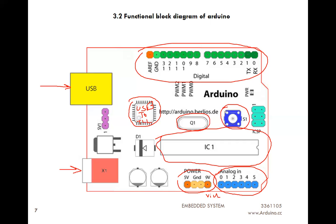The 5 volt regulator: whatever input is given to the DC jack is stepped down by the 7805 regulator. It converts the 9 volt or 12 volt input into 5 volts. That 5 volt is given to the microcontroller as well as any peripheral device connected at the digital input/output pins. Diode D1 is used to convert the input into DC.